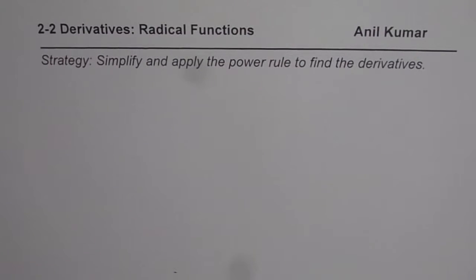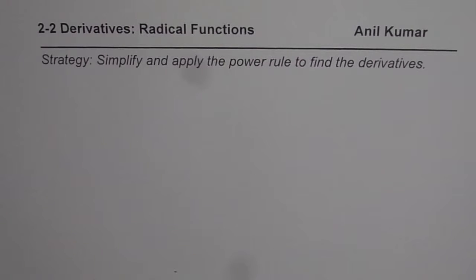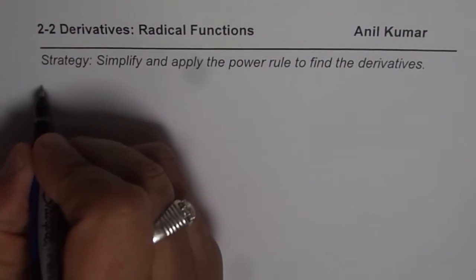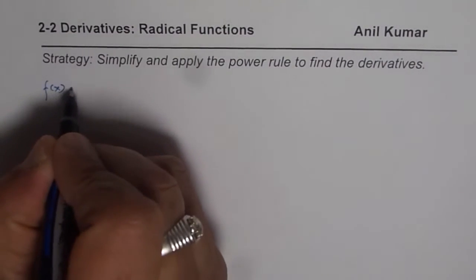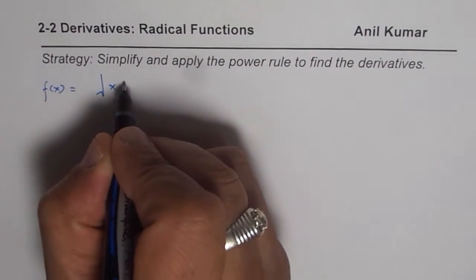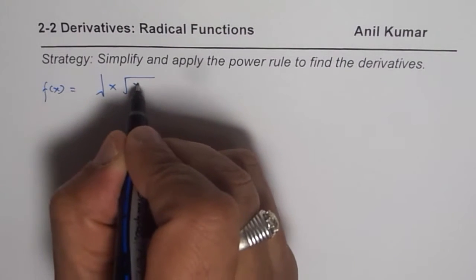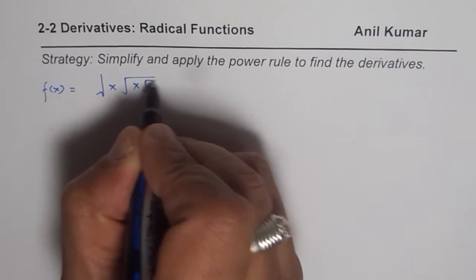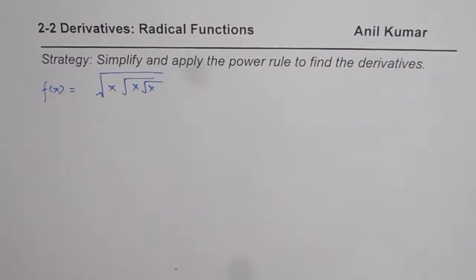I'm Anil Kumar and this particular video is especially for my students who are scared of radical functions. I'll take up two examples. The first one here is f of x equals the square root of x, and then again we have square root of x, and then we have again square root of x. So we have multiple square roots.